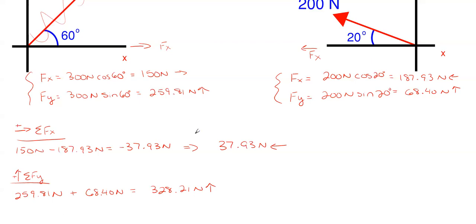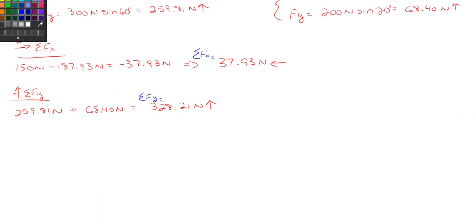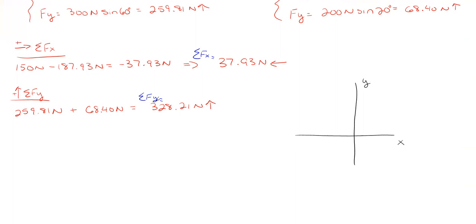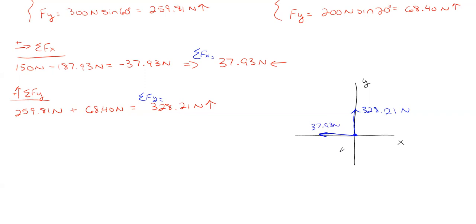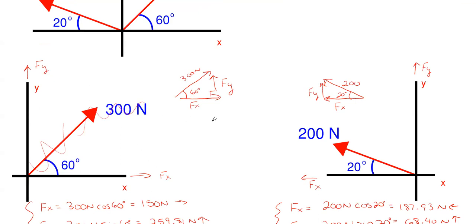Now I have the sum of all x-forces equal to 37.93 newtons to the left, and the sum of all y-forces equal to 328.21 newtons upward. I've minimized everything down to just two forces in the x and y direction. The resultant will always lie between your two final Fx and Fy forces — since these point up and to the left, the resultant also goes up and to the left. We now work backwards using those components to find the resultant.